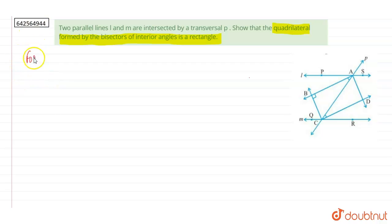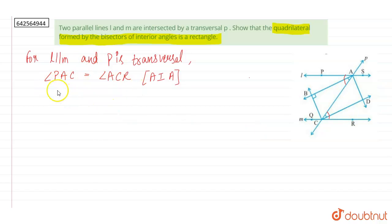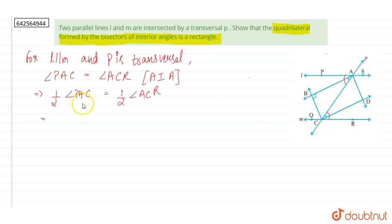For line L parallel to M with P as transversal, angle PAC will be equal to angle ACR, because they are alternate interior angles. Alternate interior angles of parallel lines are equal. So if angle PAC equals angle ACR, then half of angle PAC will also be equal to half of angle ACR. So we can conclude that angle BAC equals angle ACR. This is our first equation.